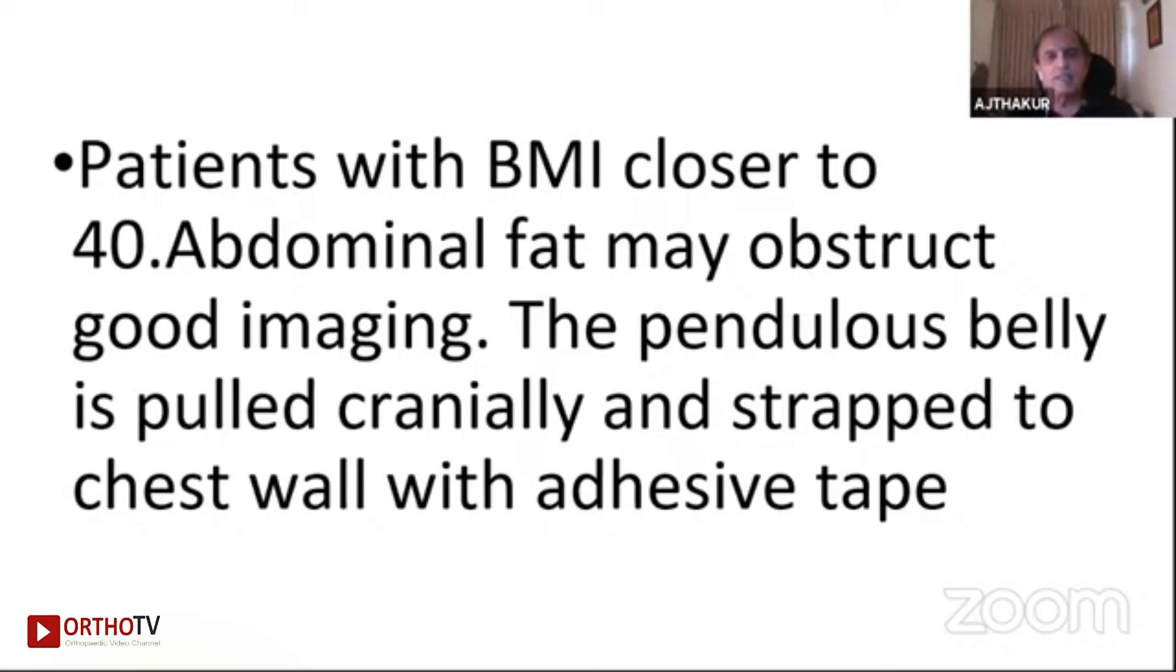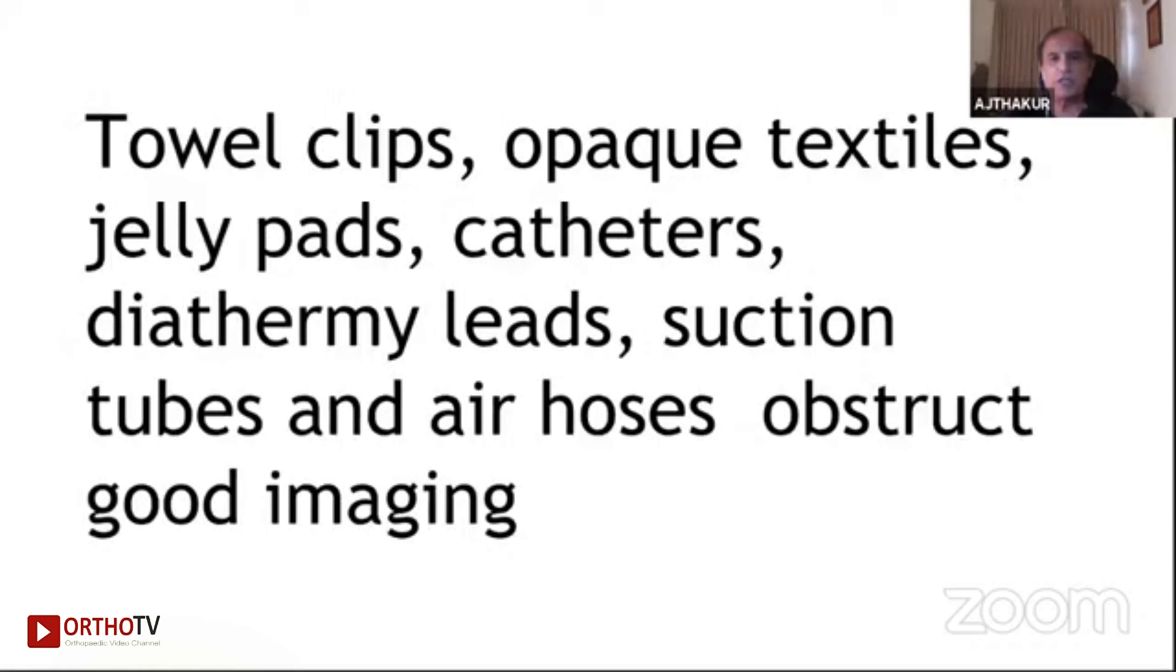These days obesity is becoming common and people with higher BMI have abdominal flaps. So it is difficult to visualize the hip joint many times. It's good to push the abdominal flap on one side and stick it with micropore tape and keep it out so that you can get a good picture. Objects like towel clips, opaque textiles, etc., they all damage your image. So make sure they are out so that you can work peacefully and accurately for your picture.